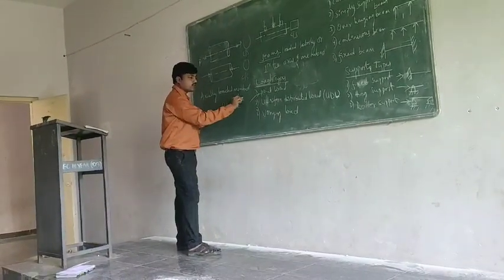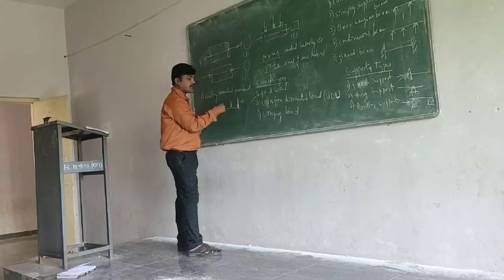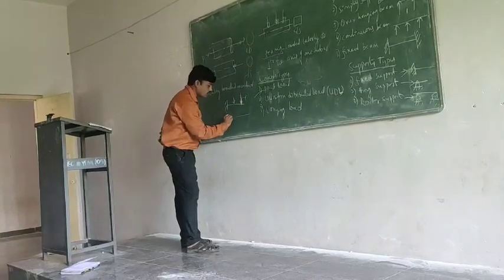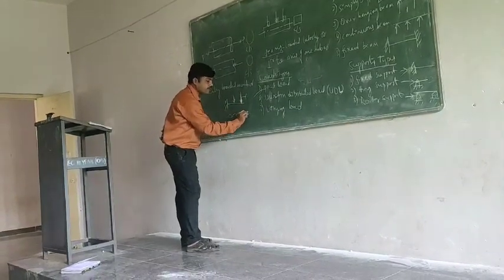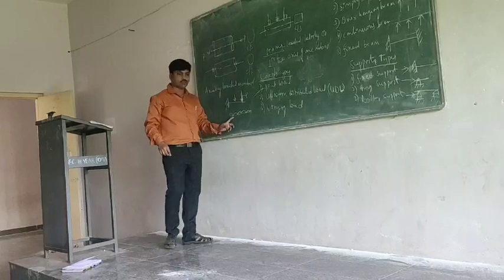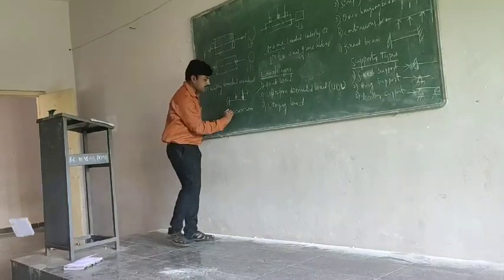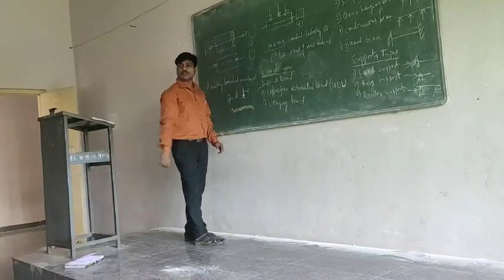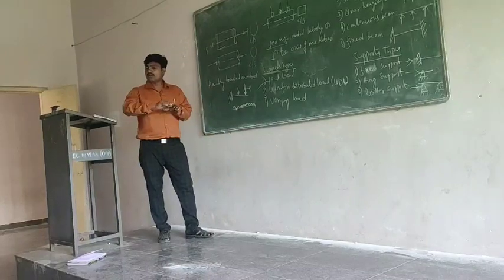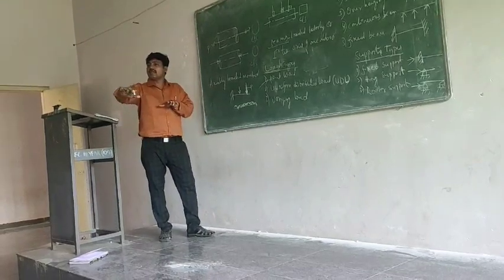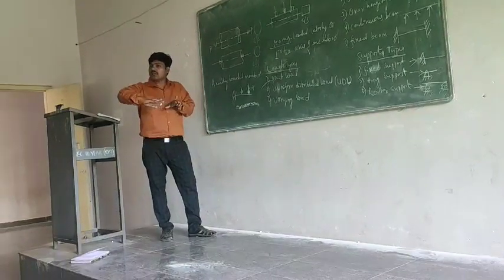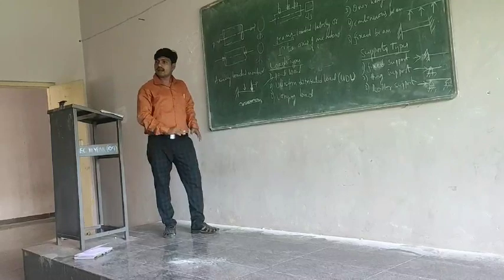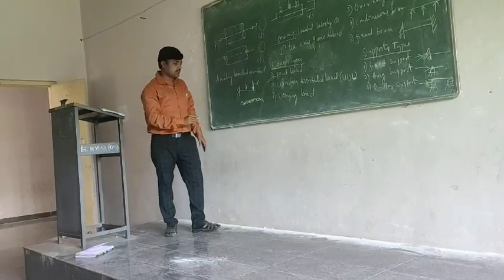This is a point in the field. This is a uniform distributed load. This is symbolically in the field. This is a uniform distributed load; this also has a symbol in the field, so you can see the result of the instrument in the field. This is symbolically in the field.